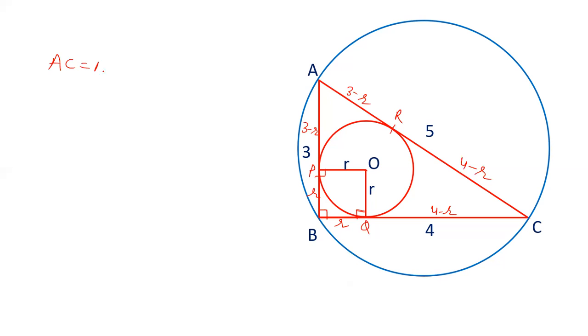Now AC is equal to AR plus CR. AC is given as 5. AR is 3 minus r. CR is 4 minus r. 5 is equal to 7 minus 2r. 2r is equal to 2. r is equal to 2 by 2, 1. Radius of incircle is 1.